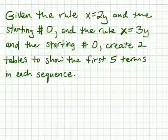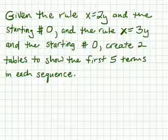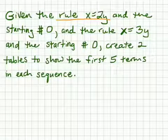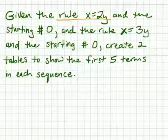The first thing that we need to do is identify what the key words are. Some of our key words would be rule is x equals 2y and starting number 0.